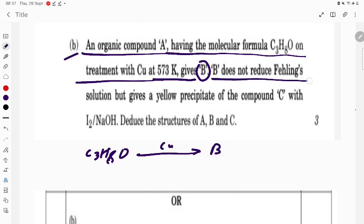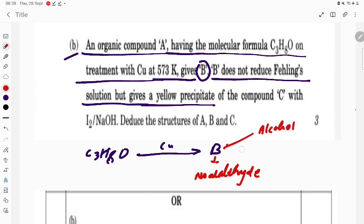B does not reduce Fehling's solution but gives a yellow precipitate. If it is not reducing Fehling's solution, it means no aldehyde, because Fehling test is given by aldehydes only. So it is not aldehyde. Either it can be an alcohol or it can be a ketone.